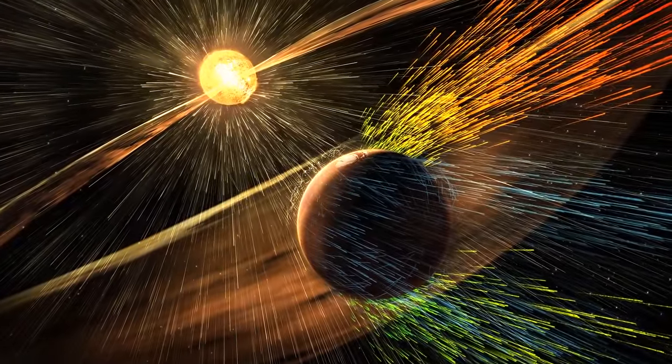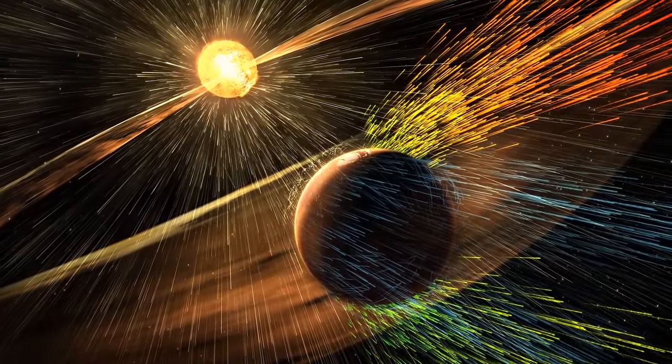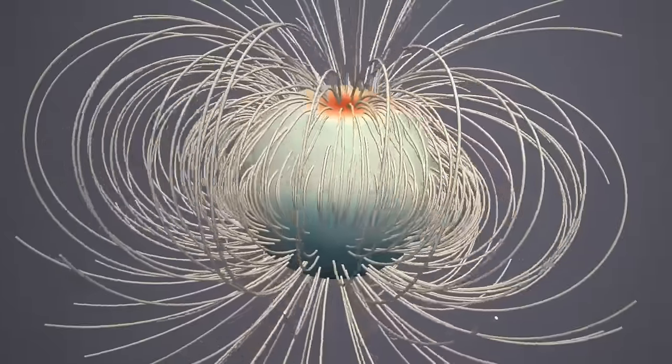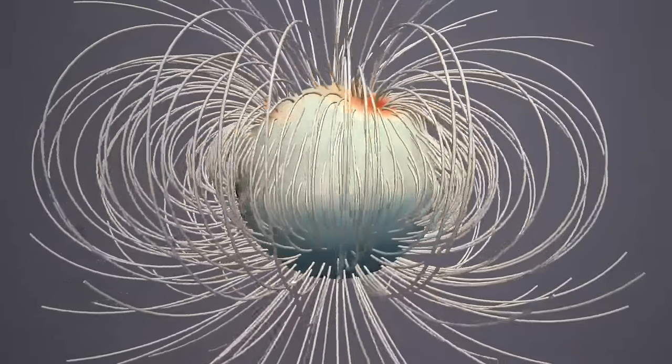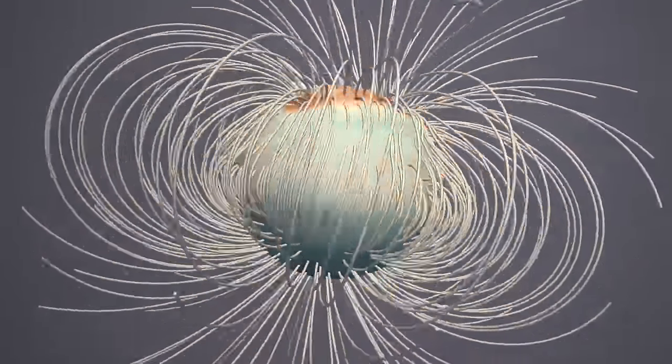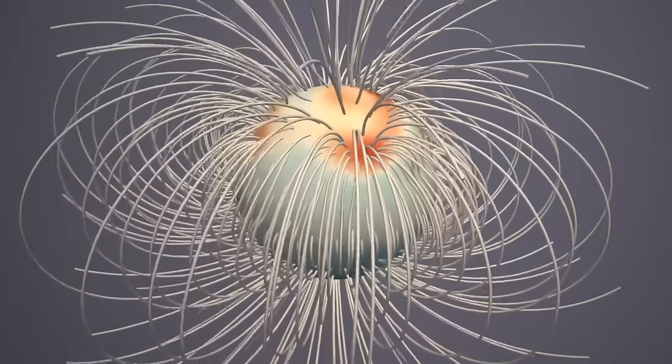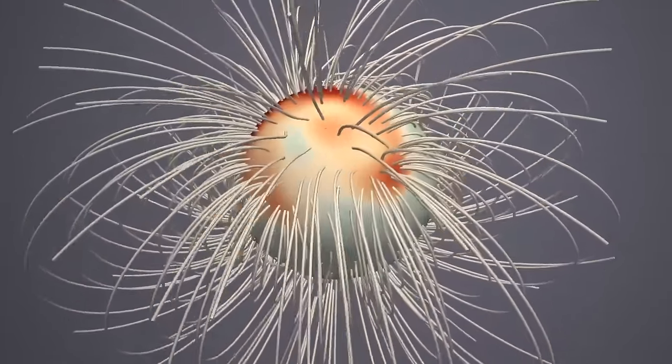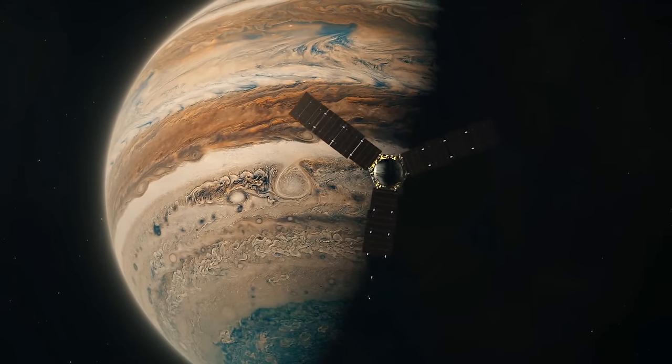But Jupiter's way bigger than us, so its protective shield is much stronger. Magnetic fields are generated by something called a dynamo, which is like a big swirling conducting fluid inside the planet. This fluid moves around and rotates, kind of like a dance party happening deep within the planet.